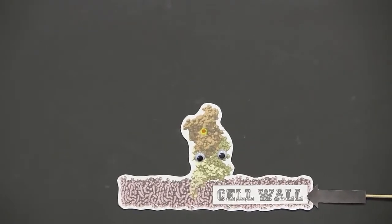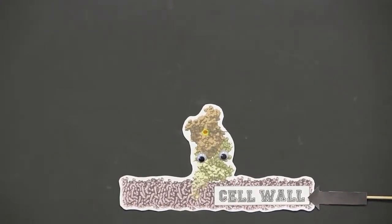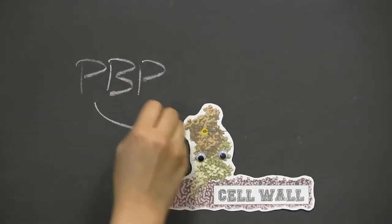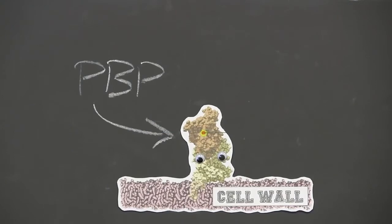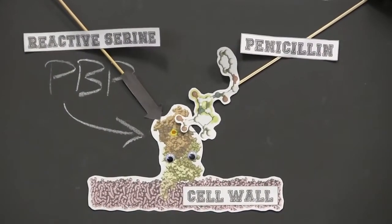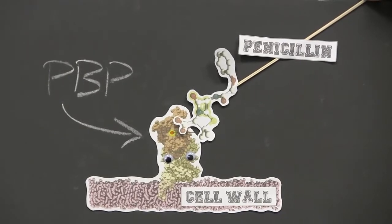Bacterial cell walls are made with peptidoglycan monomers that are cross-linked together in a process catalyzed by penicillin-binding proteins, also known as PBP. In the presence of a penicillin antibiotic, the reactive serine in the center of PBP will covalently bind to penicillin. This changes PBP's shape.